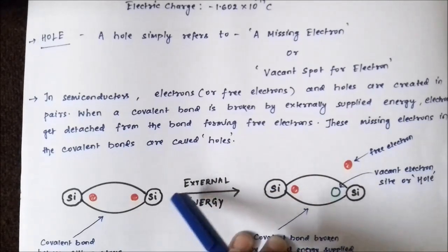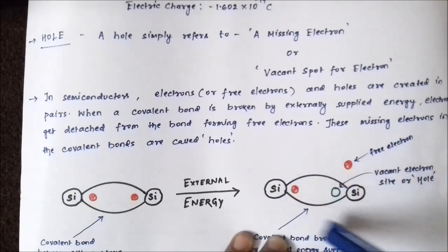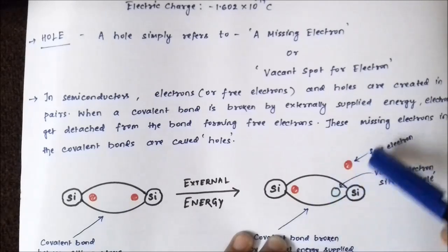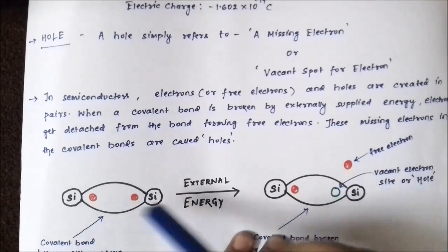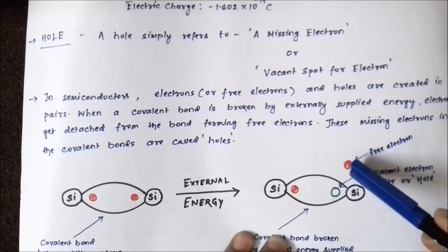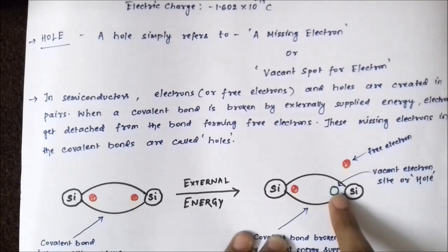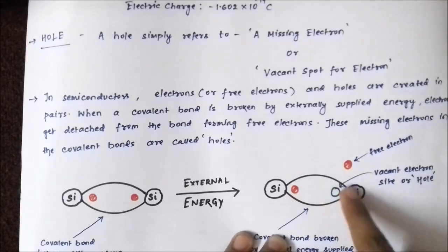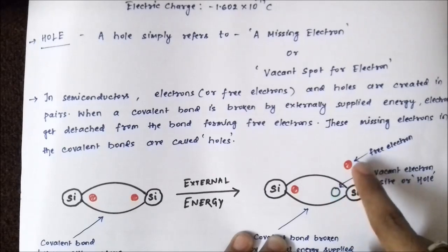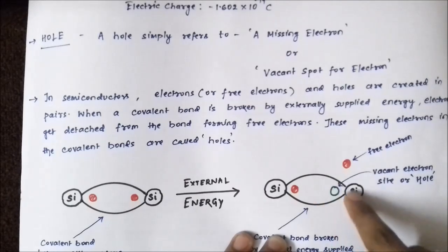Now with the application of external energy, we are able to break this covalent bond. When this covalent bond is broken, one of these electrons becomes free. When this electron becomes detached and moves away from the covalent bond, it leaves a vacant site — an empty space, a vacancy — which is created by the movement of this electron. This vacant spot is called a hole.